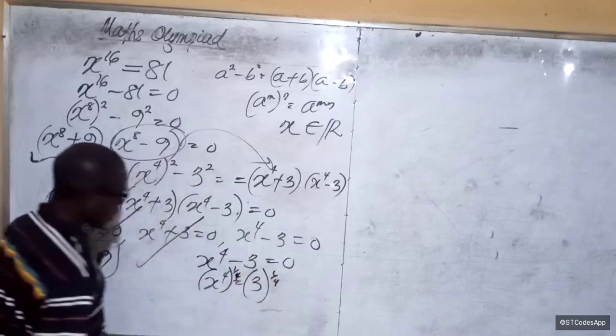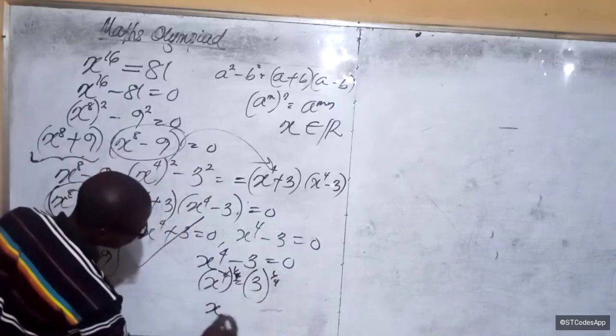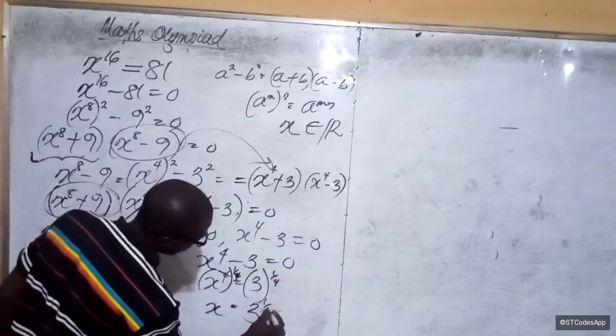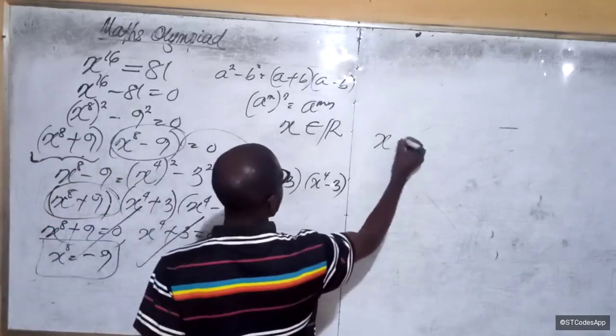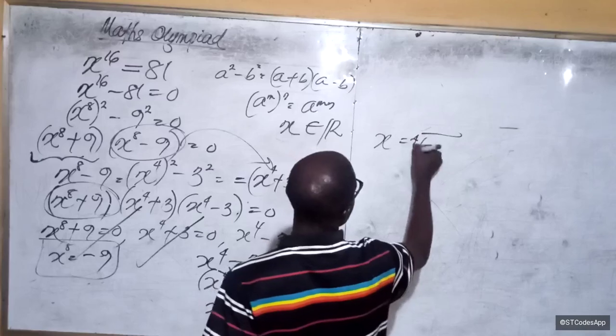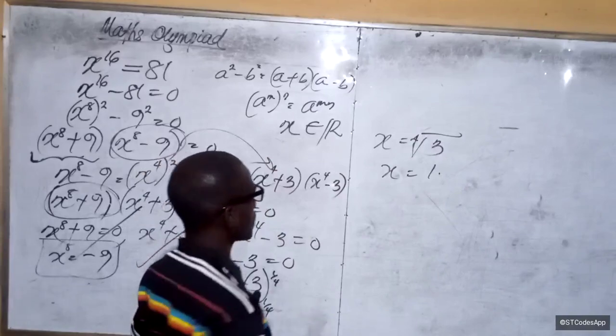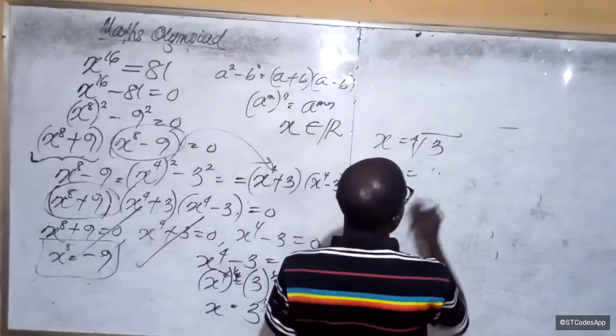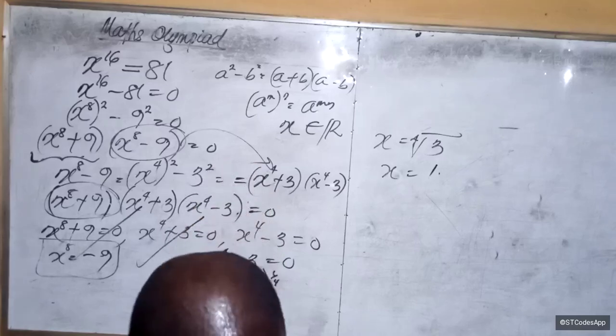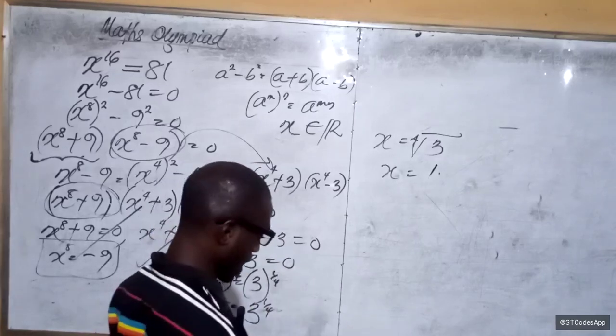From here, we take the fourth power. That's one over four times three to the power one over four. So x should equal to 3 to the one over 4. x therefore becomes the fourth root of 3, and x will equal to one point something.